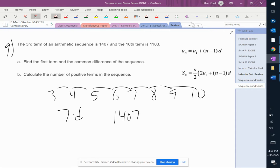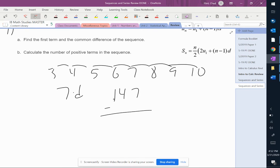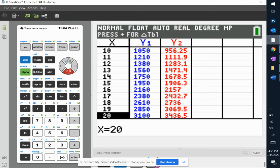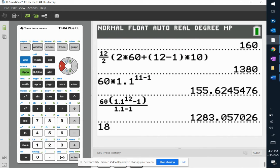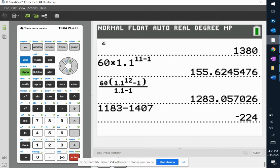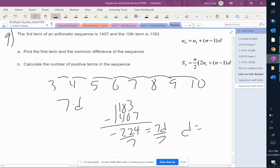So 1407 minus 1183. Actually, let me do it their way because 1183 is the second term. So 1183 minus 1407. So we have negative 224. That's the total change. It happened 7 times. Hopefully this gives us a nice round number. So negative 32 is our difference.